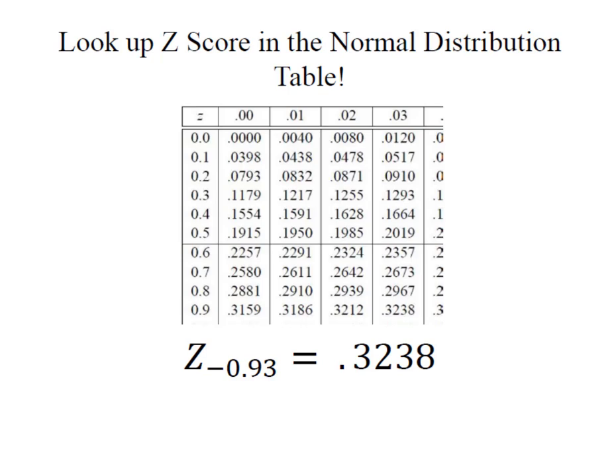Here I am with my normal distribution table, and I'm going to look up my z-score of negative 0.93. Here's my 0.9, and here I'm going to pick up the 0.3.